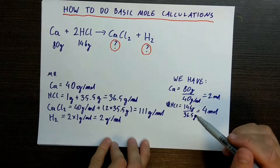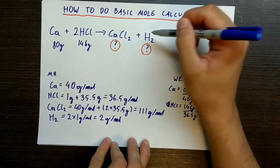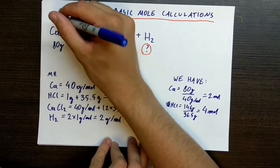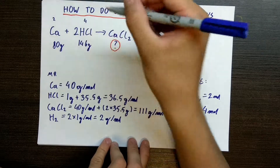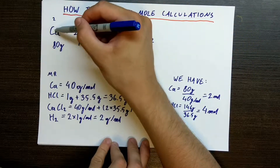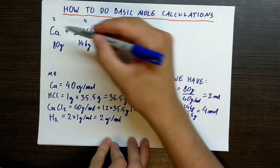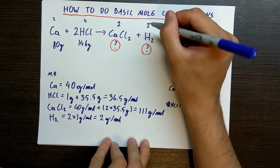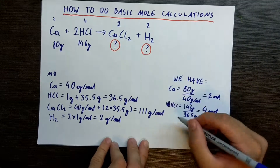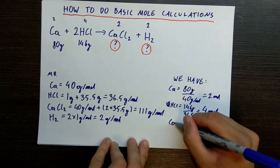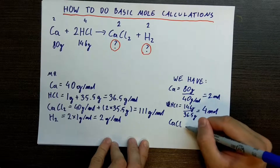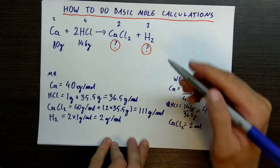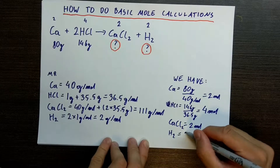Knowing this, how many moles are we going to make of the products? The ratios are the same. We have 2 moles of calcium and 4 moles of HCl — that's the same 1:2 ratio as written in the equation. So we have 2 moles of calcium chloride and 2 moles of hydrogen.